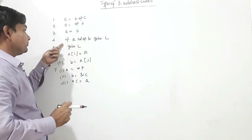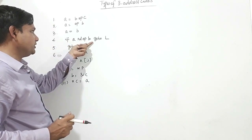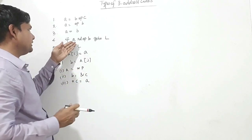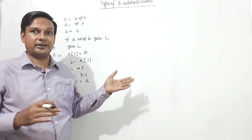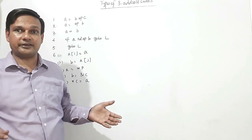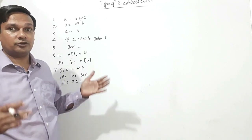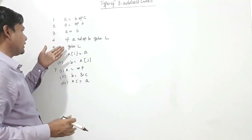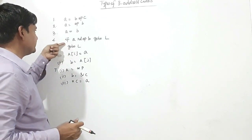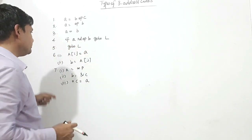Now, if A some_relational_operator B, go to label A. Relational operators may be: greater than, less than, greater than equal to, less than equal to, equal to, or not equal to. And this form is unconditional go to, while this is a conditional form.